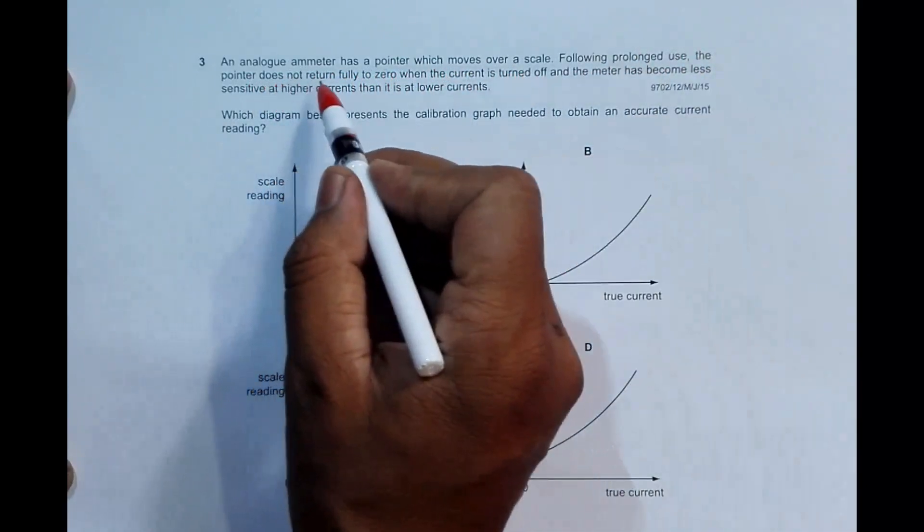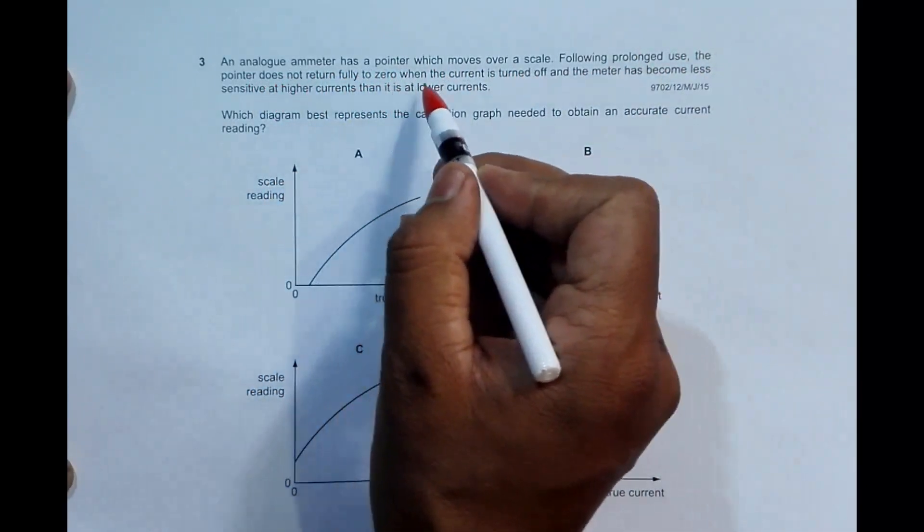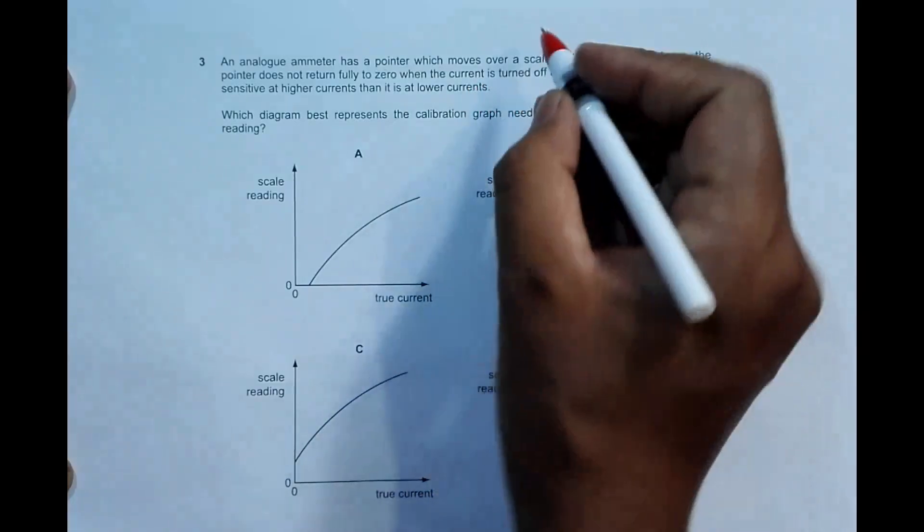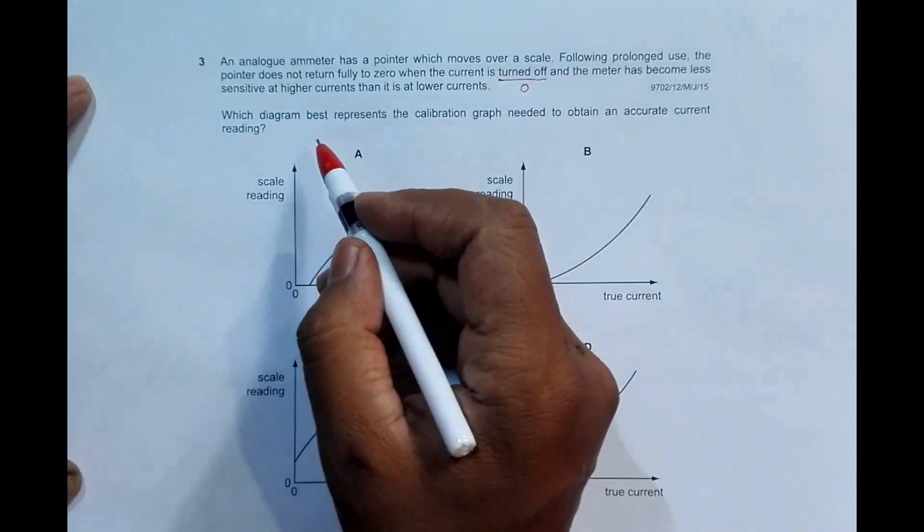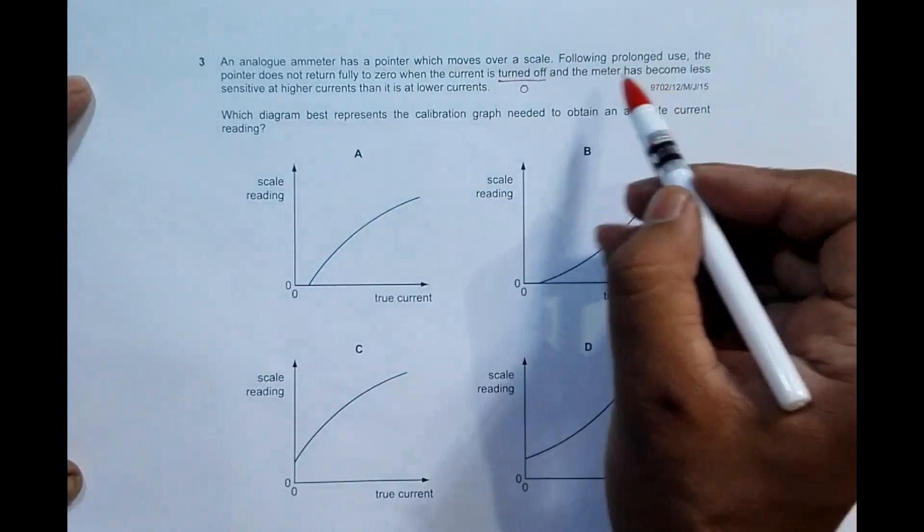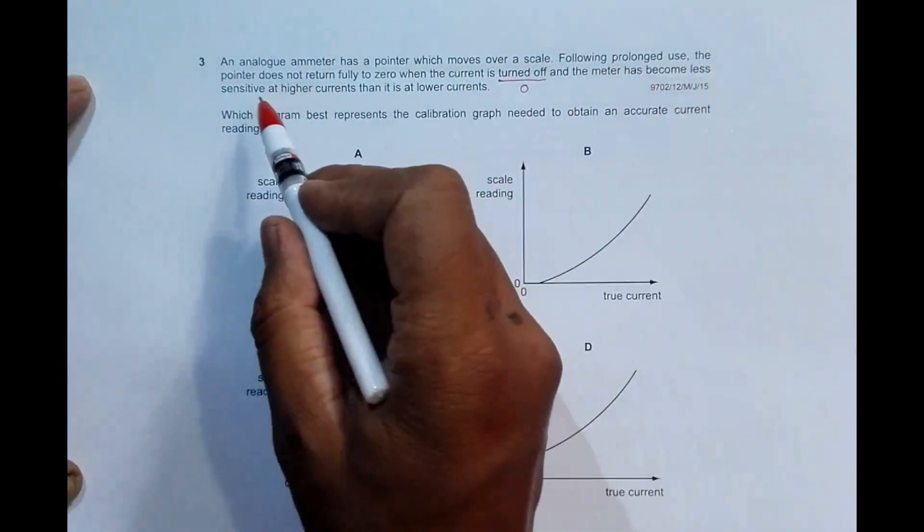When current is zero, the pointer does not return fully to zero, and the meter has become less sensitive at higher currents than it is at lower currents.